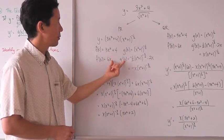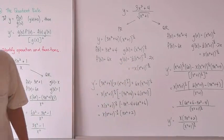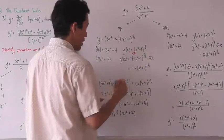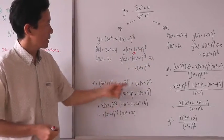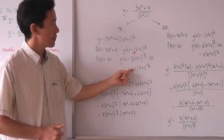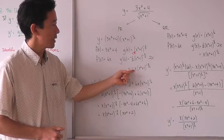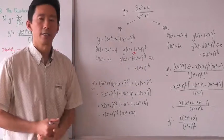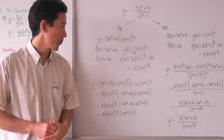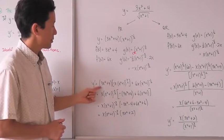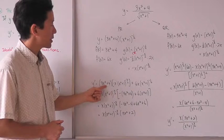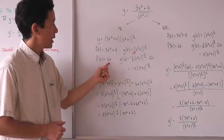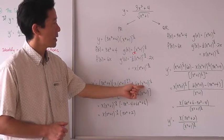Take the derivative of both f of x and g of x. In the case of g of x, we have to use the chain rule. The simplified g prime of x is negative x times the quantity x squared plus 1 to the negative 3 halves power. Using the product rule, we take f of x times g prime of x plus f prime of x times g of x.